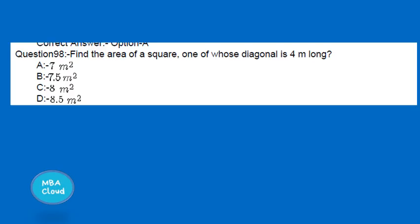A square has 4 equal sides. We use the diagonal relationship: a² + a² = d². Since the diagonal is 4m, a² + a² = 4² = 16, so 2a² = 16.